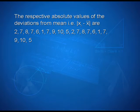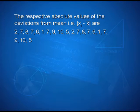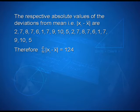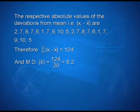The respective absolute values of the deviations from the mean |xi − x̄| are: 2, 7, 8, 7, 6, 1, 7, 9, 10, 5, 2, 7, 8, 7, 6, 1, 7, 9, 10, 5. Mean deviation about x̄ = 124 / 20 = 6.2.